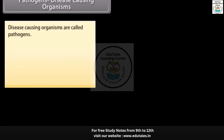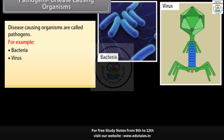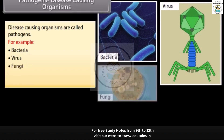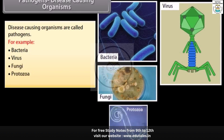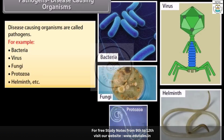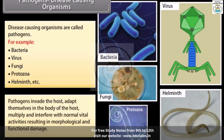Disease-causing organisms are called pathogens — for example, bacteria, viruses, fungi, protozoans, helminths, etc. Pathogens invade the host, adapt themselves in the body of the host, multiply and interfere with normal vital activities, resulting in morphological and functional damage.